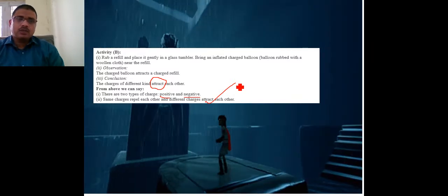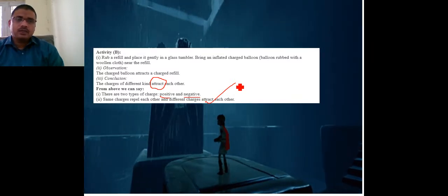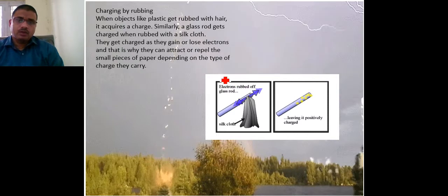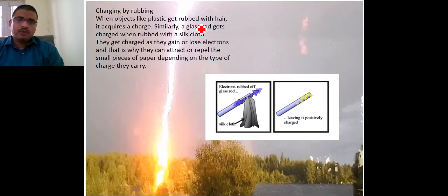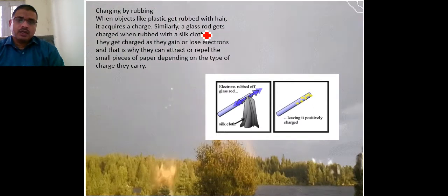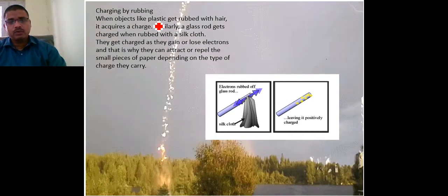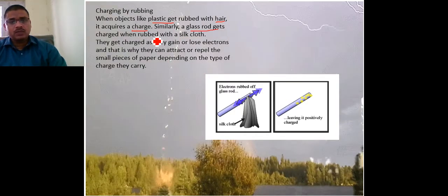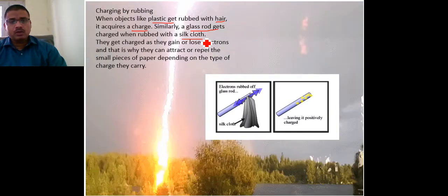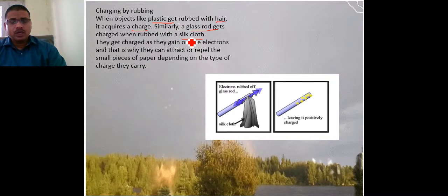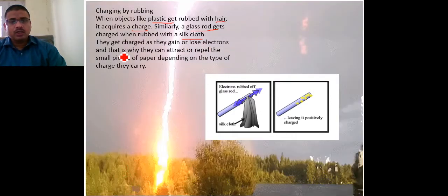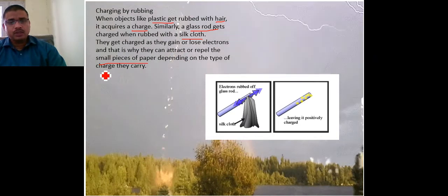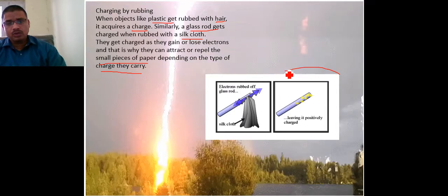When plastic is rubbed with hair, it acquires a charge. Similarly, a glass rod rubbed with silk cloth also gets charged. Objects get charged as they gain or lose electrons, and because of that they can attract or repel small pieces of paper, depending on the type of charge they carry.